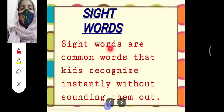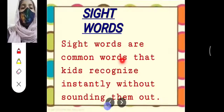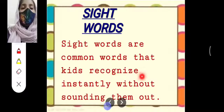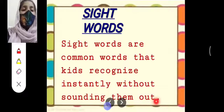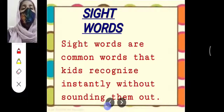Sight words are common — C-O-M-M-O-N — words that kids recognize instantly without sounding them out. Without — W-I-T-H-O-U-T — sounding — S-O-U-N-D-I-N-G — them out. Sight words are common words that kids recognize instantly without sounding them out.